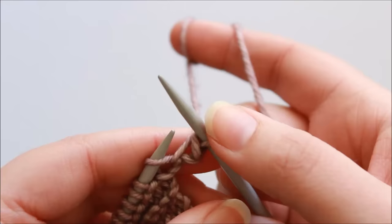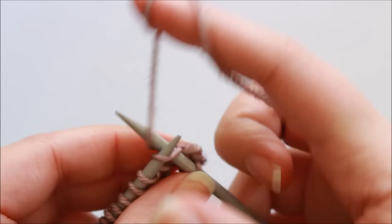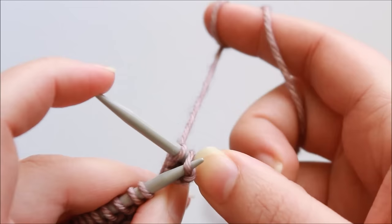We do this three more times to bind off four stitches in total, so knit the first stitch and pass the first work stitch over the last work stitch, and then we've bound off two stitches.